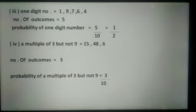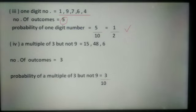For a one-digit number: one-digit numbers are 9, 7, 6, and 4, so number of outcomes is 4... the probability of a one-digit number is 5/10 = 1/2. For a multiple of 3 but not 9: these are 48, 18, 6, and 36 — number of outcomes is 3, and the probability of a multiple of 3 but not 9 is 3/10.